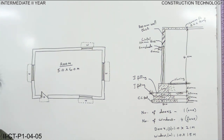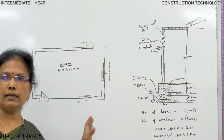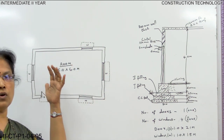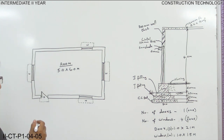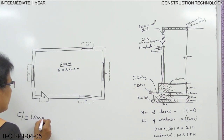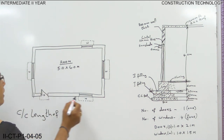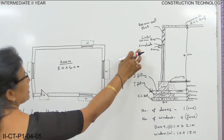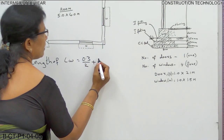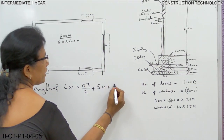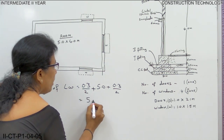The same as you calculate in the long wall and short wall method, here also you have to calculate the centre-to-centre length of the long wall and centre-to-centre length of the short wall. We will see the centre-to-centre length of the long wall. From here to here we have to take from centre to centre. The wall thickness is 300 mm, so half the thickness is 0.3/2, plus the wall length of 5.0, plus 0.3/2. Total centre-to-centre length of the long wall is 5.3 meters.